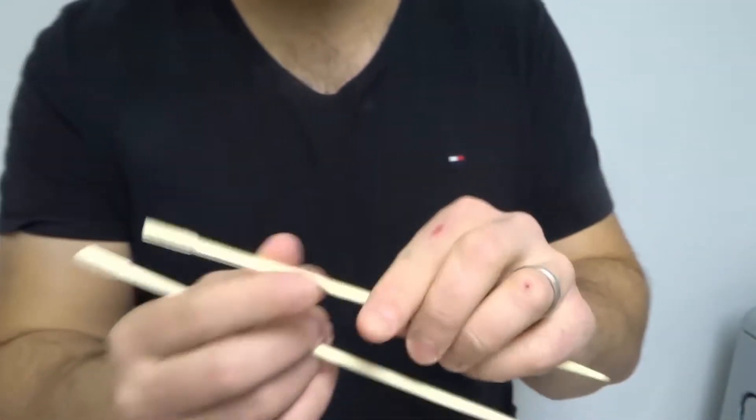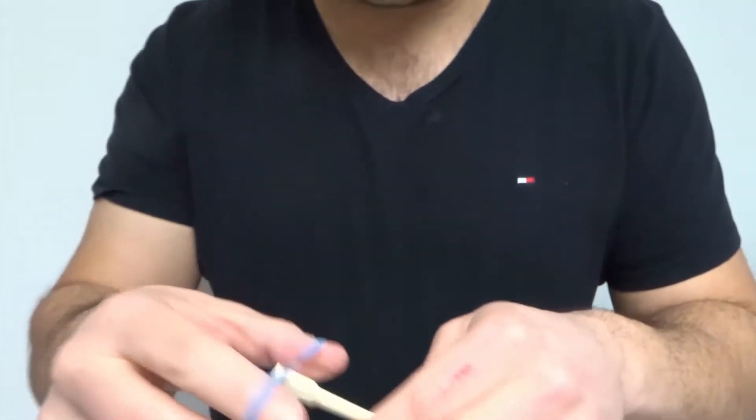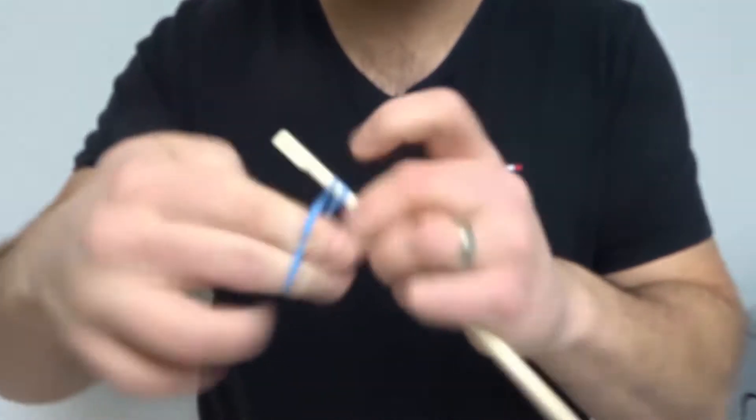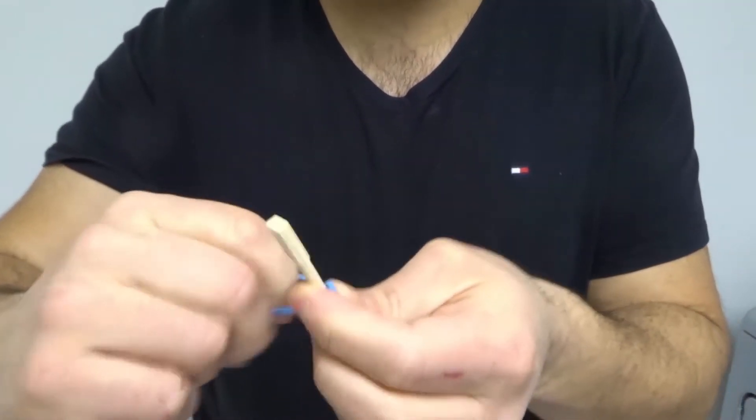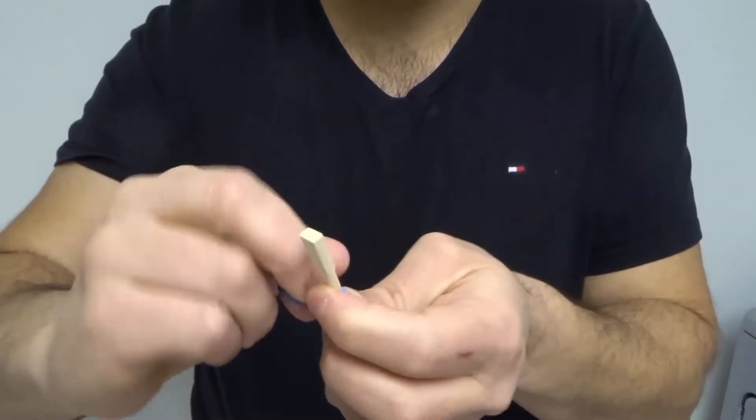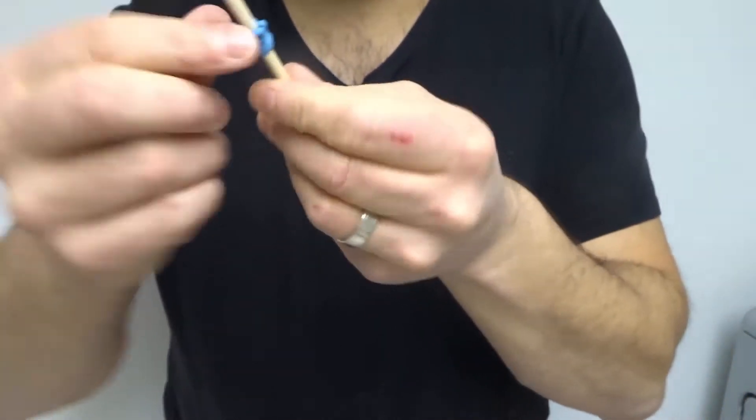As you can see right here, I have these very simple chopsticks. What I'm gonna do is take a rubber band and wrap it around. The goal is to wrap it in as close of a spot as possible to itself so that you can get a sort of thickness on it.